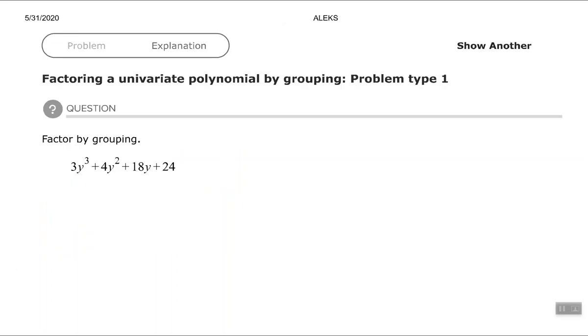All right. So this one, we have factoring a univariate polynomial by grouping. And again, I look at each term to see if there's a common factor all the way across for all of my terms. And there's no common factor. Next I count my terms. I have four terms. So the way I want to try to factor a four term polynomial is by using the grouping method.